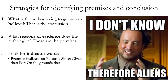Thirdly, look for indicator words. There are two types: premise and conclusion indicators. Premise indicators include words such as 'because,' 'since,' 'given that,' 'for,' or 'on the grounds that.' 'Because' and 'since' are the two most common premise indicator words. Not all arguments have indicator words, but when they're there, you should be able to recognize them.